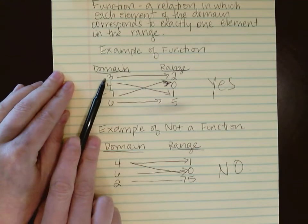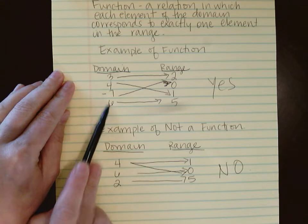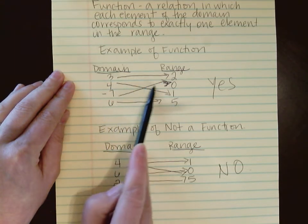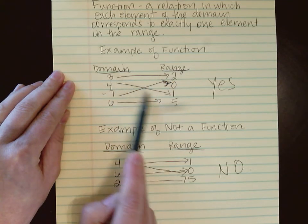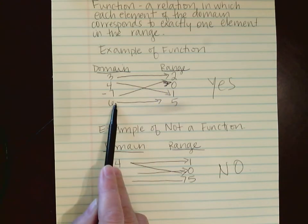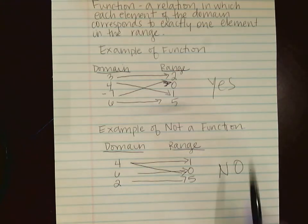On this first example, to be a function, each one of these elements can only go to one element in the range. So if you'll notice, the 3 only goes to 2, the 4 only goes to 1, negative 7 only goes to 0, and 6 only goes to 5. There are no elements in the domain that go to multiple numbers in the range, so yes, that is a function.